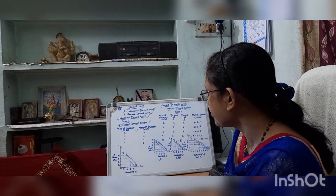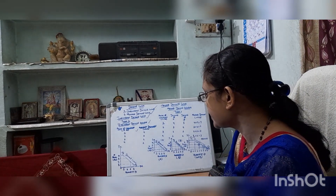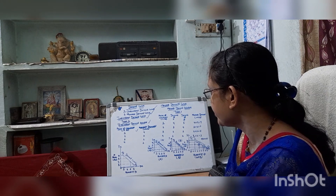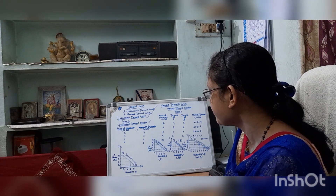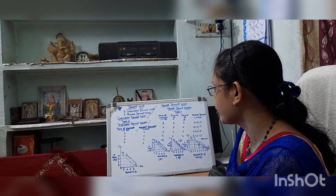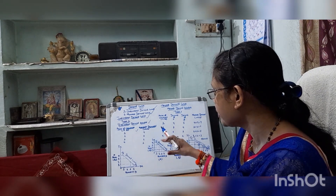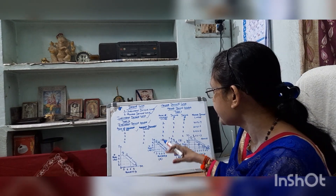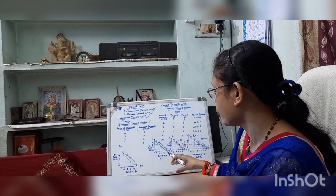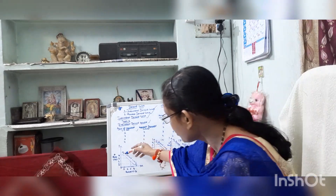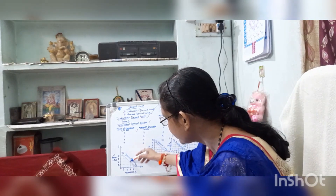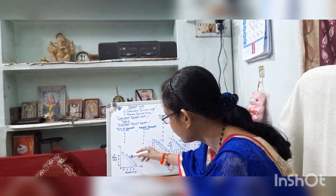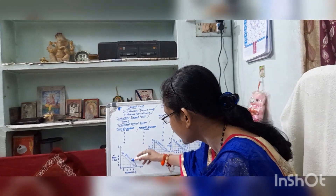There is an inverse relationship between demand and price of a product. When price is 2, demand is 1. This is the demand curve — it slopes downward.